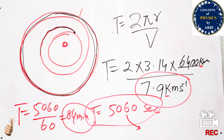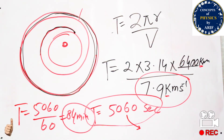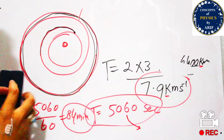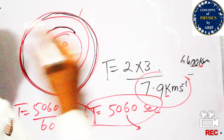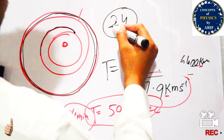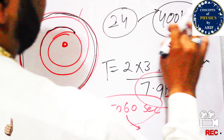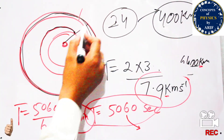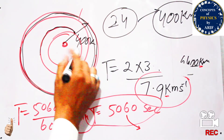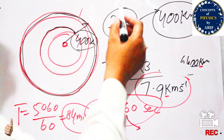The higher the velocity, the higher the satellite, and the smaller the required velocity, the longer it takes to complete a revolution around the earth. For close-orbiting satellites, there are around 24 artificial satellites present, at a distance of approximately 400 kilometers from the earth's surface.